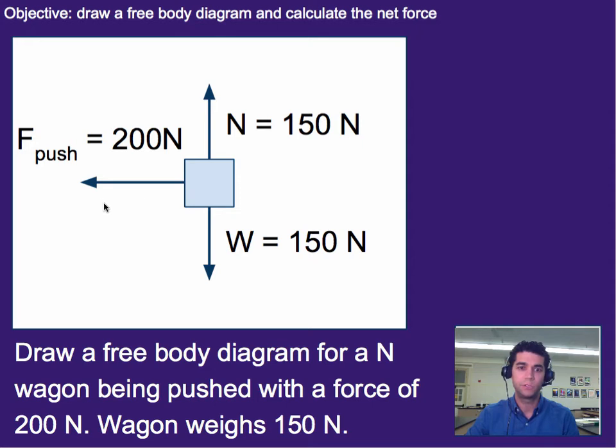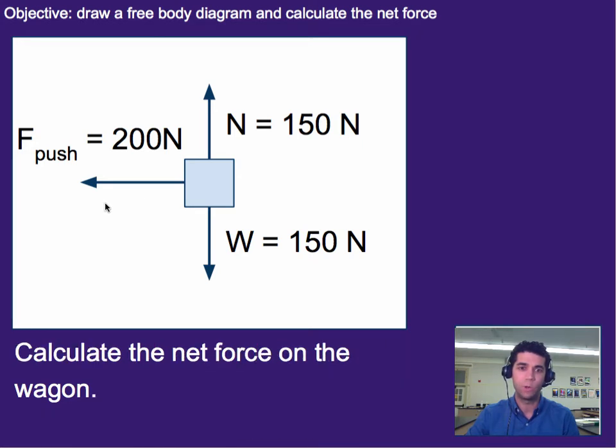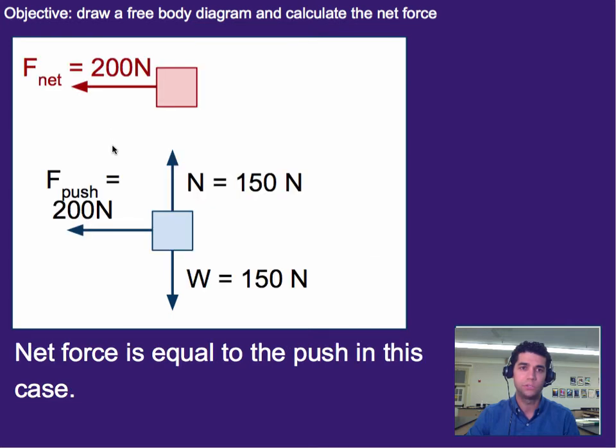So if we were then to go ahead and look at what the net force is or calculate the net force, we would first focus on these two, the normal force and weight. We would notice that those two would cancel out because they're in opposite directions. So 150 minus 150 just gives us zero. And then that leaves us with just one force to the left, which means that our net or overall force in this case is 200 newtons.